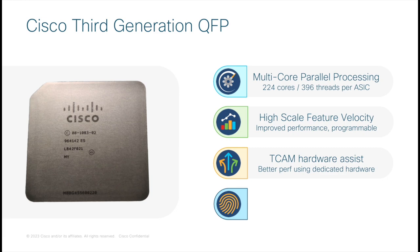This hardware-based data plane results in CEF forwarding north of 500 gigabits per second for iMix traffic. The QFP 3.0 ASIC also integrates functions that were external in previous QFP 2.0 based hardware. Each QFP 3.0 ASIC includes 16 built-in crypto engines. By having SuiteB compatible crypto engines built in, IPSec processing is optimized, resulting in IPSec performance well above 100 gigabits per second for SD-WAN and non-SD-WAN deployments.